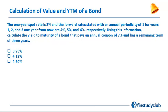So here we have a 3-year bond. We've been given the 1-year spot rate and the 1-year forward rate 1 year from now, 2 years from now, and 3 years from now. Let's set up the timeline. So here we have year 1, year 2, year 3.